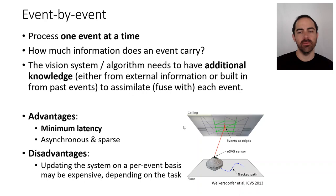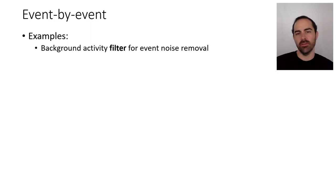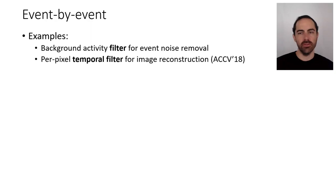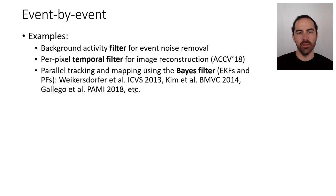Examples of event-by-event methods include: a background activity filter for event noise removal, where as an event arrives it checks neighboring pixels to see how far away in time neighboring events occurred, and if it is an isolated event it removes it — this is a deterministic filter. Another example is a per-pixel temporal filter for image reconstruction, which we will cover in the image reconstruction topic. We also have probabilistic filters such as parallel tracking and mapping using Bayes filters, extended Kalman filters, or particle filters. Many such examples exist in the literature, and that's largely how event-by-event methods were popularized in the context of SLAM and camera localization, with references from 2013, 2014, and 2018.